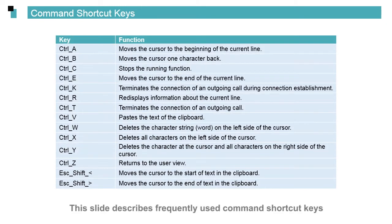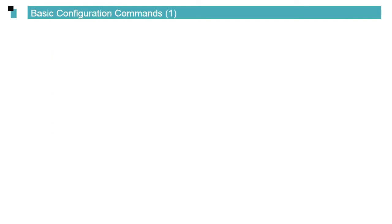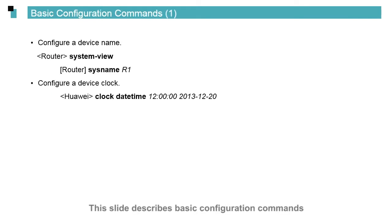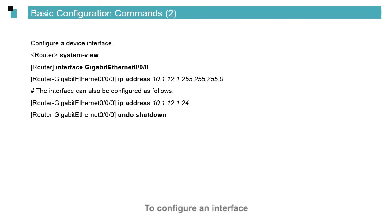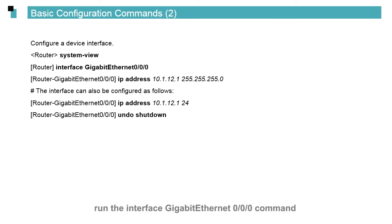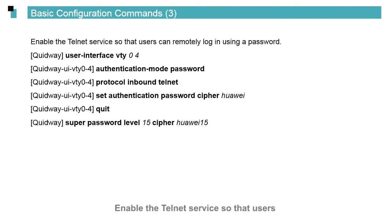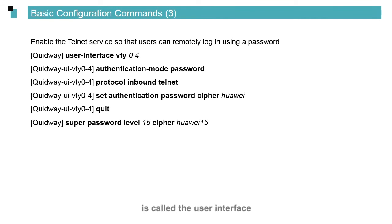This slide describes frequently used command shortcut keys. This slide describes basic configuration commands. For example, we can configure a device name in the system view and a device clock in the user view. To return to the user view, run the quit command in the system view. To configure an interface, for example GigabitEthernet 0/0/0, run the interface GigabitEthernet 0/0/0 command to enter the corresponding interface view and then configure an IP address for the interface. Enable the Telnet service so that users can remotely log in using a password. The interface to be remotely accessed is called the user interface.